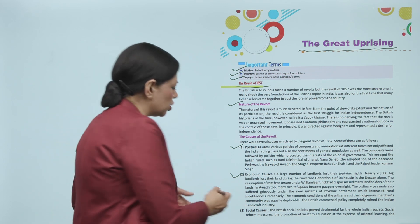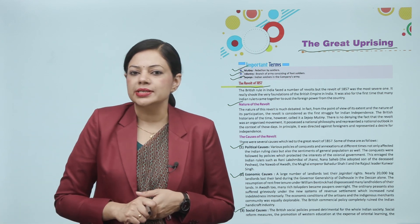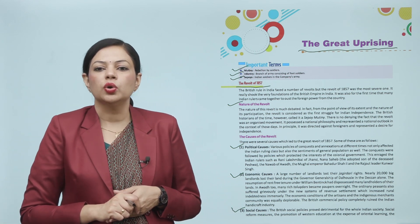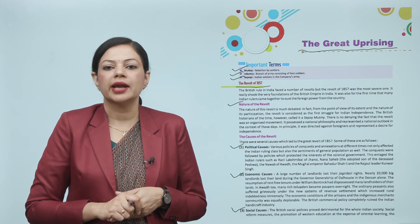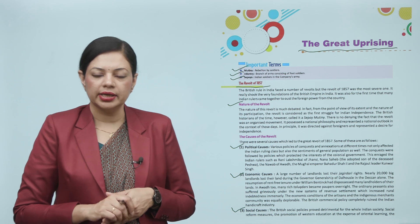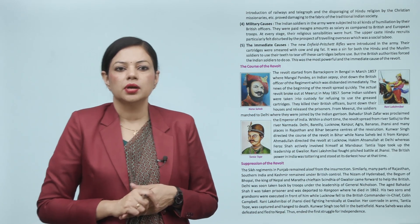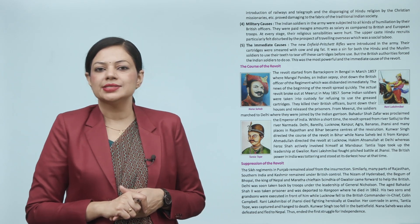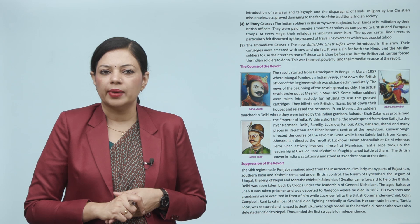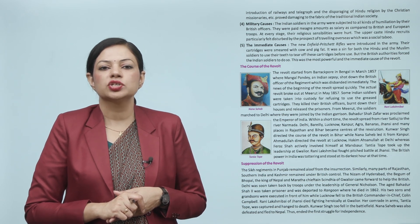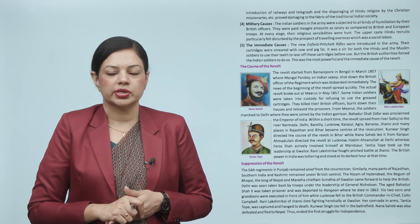Third is the social cause. The British social policies proved detrimental for the whole Indian society. Social reform measures, the promotion of Western education at the expense of Oriental learning, the introduction of railways and telegraph, and the disparaging of Hindu religion by Christian missionaries proved damaging to the fabric of traditional Indian society.